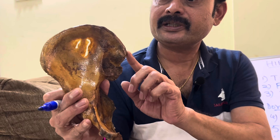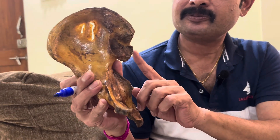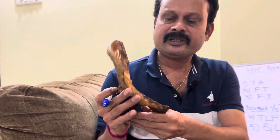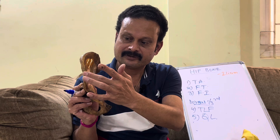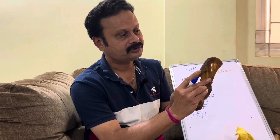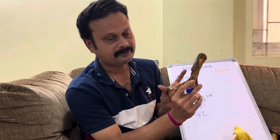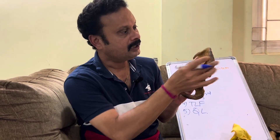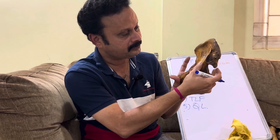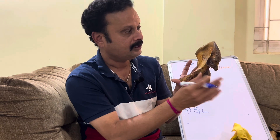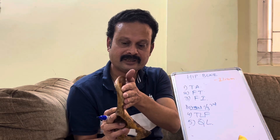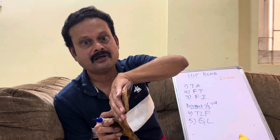There is also the posterior superior iliac spine and the posterior inferior iliac spine. Coming to the borders: the anterior border extends from the anterior superior iliac spine to the anterior inferior iliac spine; the posterior border extends from the posterior superior iliac spine to the posterior inferior iliac spine; and the medial border continues below with the arcuate line and divides the two surfaces.